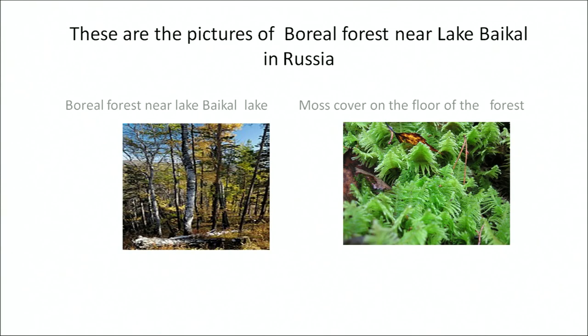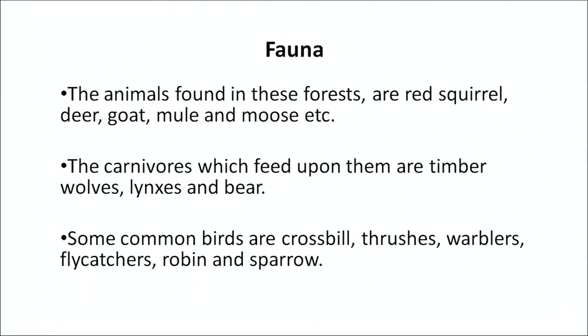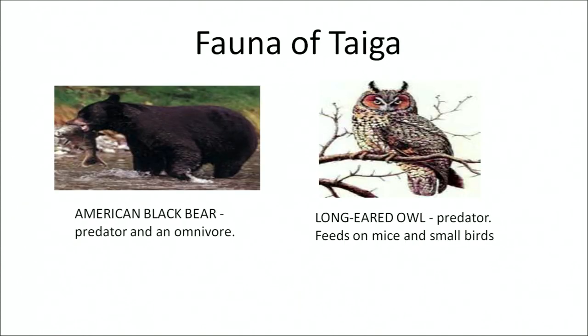These are the plant species commonly found in these forests. The animals found in these forests are red squirrel, deer, goat, mule and moose. The carnivores which feed upon them are timber wolves, lynxes and bear. The common birds found here are crossbill, thrushes, warblers, flycatcher, robin and sparrows. These are pictures of the owl and the American black bear.